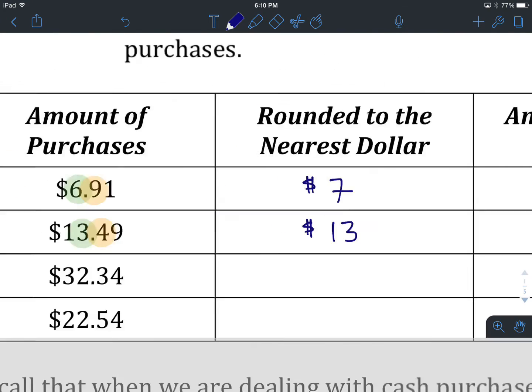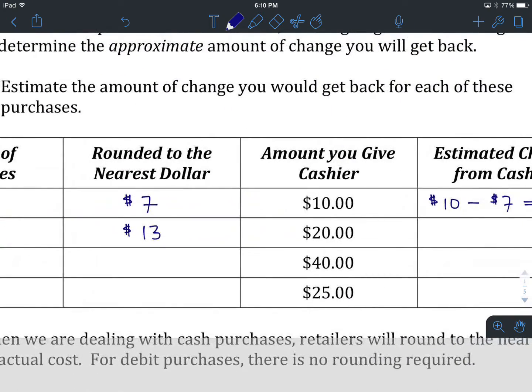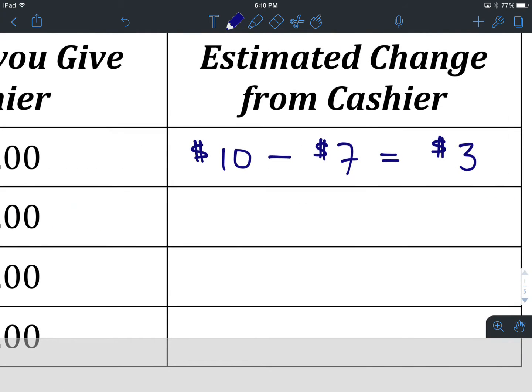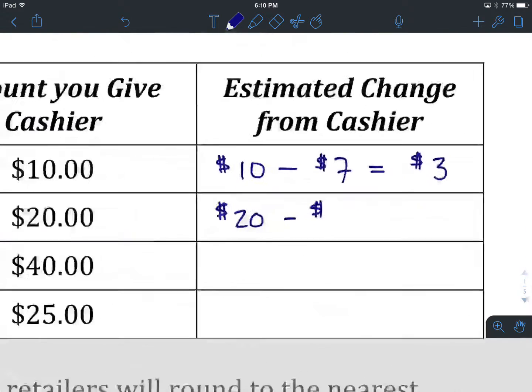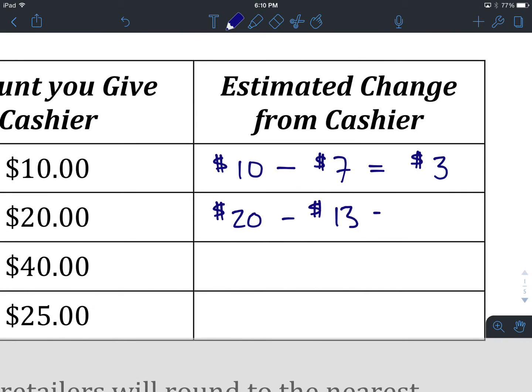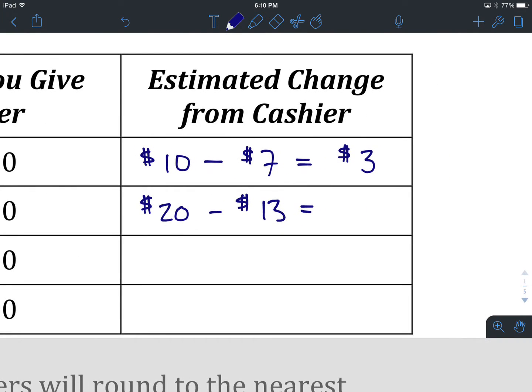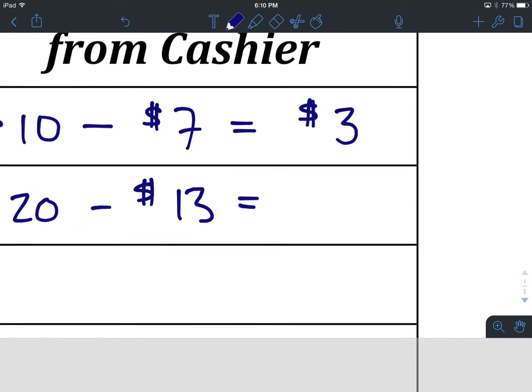So there's our nearest dollar. We give our cashier $20. Our estimated change from $20 is the difference between what we give and what we think we're going to be paying. We thought that was going to be approximately $13. The difference between $20 and $13 is $7.